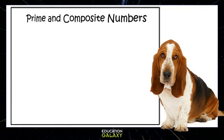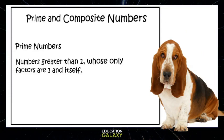Let's explore prime and composite numbers. Prime numbers are numbers greater than 1 whose only factors are 1 and itself. So 2 is prime, because the only numbers that multiply to give you 2 are 1 and 2. 5 is prime, because the only numbers that multiply to give you 5 are 1 and 5. Same thing with 19 and 29.